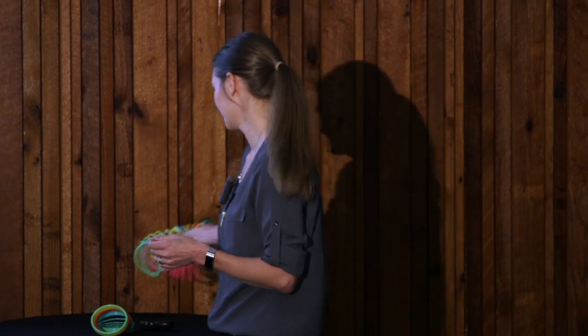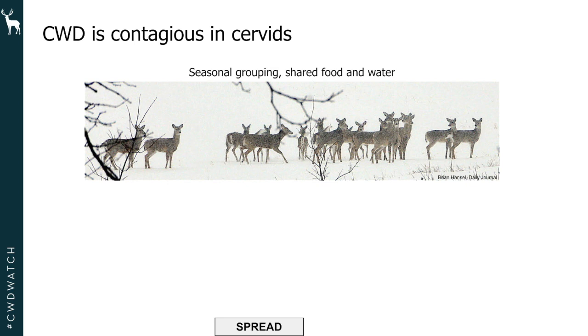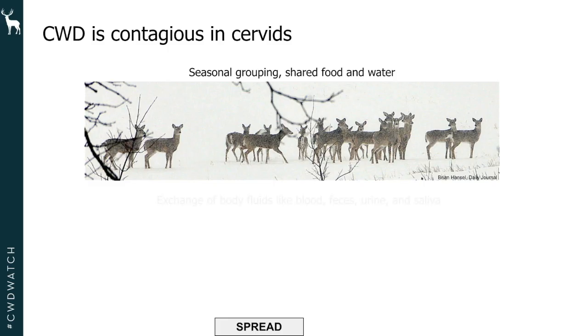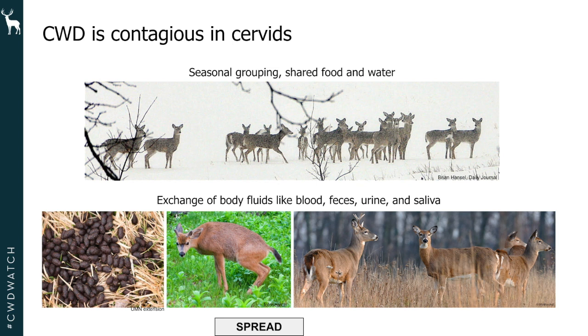CWD is contagious within and among cervids. Cervids group up at different times of the year — seasonal breeding, harsh winters, shared scarce resources like water or food bring deer together. In everyday situations, deer are potentially passing body fluids — feces, urine, or saliva — and those can pass prions among each other. Those are all potential exposure points within and among deer themselves.